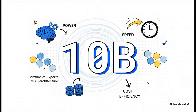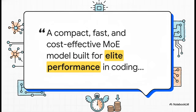Here's the magic number: 10 billion. The entire model is a beast — it's got 230 billion total parameters. But here's the clever part: for any single task, it only fires up a lean 10 billion of those. That's the secret sauce. It's how it manages to be so fast and so cheap without giving up all that raw power. The team themselves call it a compact, fast, and cost-effective MoE model built for elite performance in coding and agent tasks. This thing is designed for the really heavy lifting.